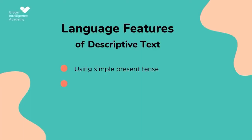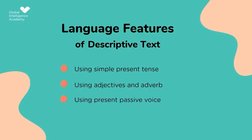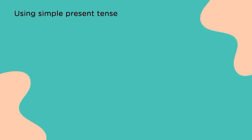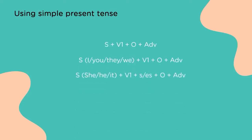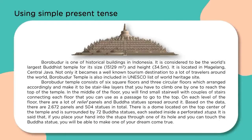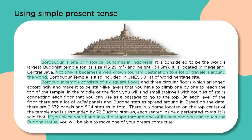First, using simple present tense. Second, using adjective and adverb. Third, using present passive voice. For simple present tense, the formula is: Subject + Verb 1 + Object, or Subject + is/am/are + Verb 1 + S/ES + Object. For example: Borobudur is one of the historical buildings in Indonesia. Not only that, it becomes a well-known tourist destination for travelers around the world. Borobudur temple consists of six square floors. Nah, itu adalah contoh dari using simple present tense.